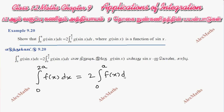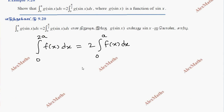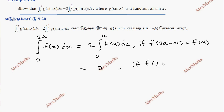The first case value is 0. So if f of 2a minus x equals f of x, the result is 2 times integral 0 to a. The second case: if f of 2a minus x equals minus f of x, the value is 0.